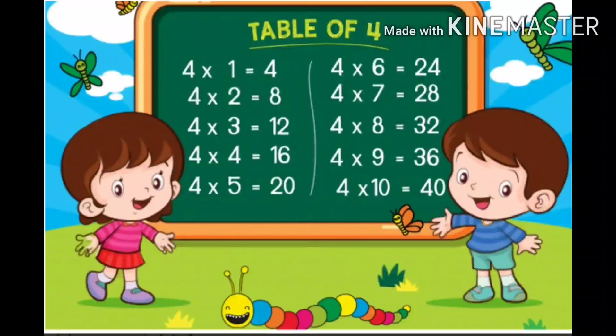Let's recall this table. 4 1s are 4, 4 2s are 8, 4 3s are 12, 4 4s are 16, 4 5s are 20.